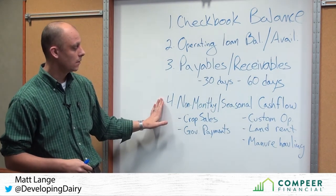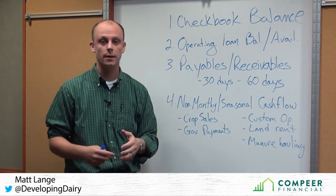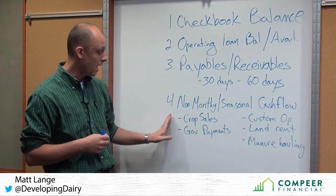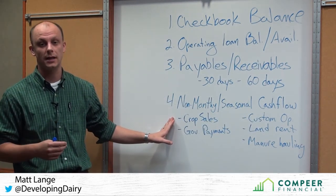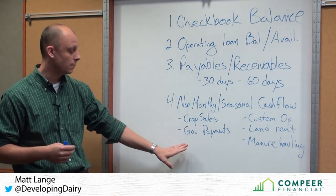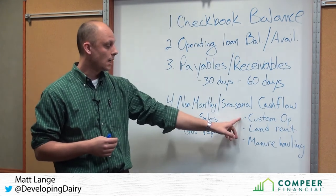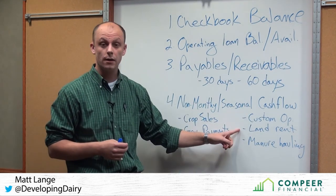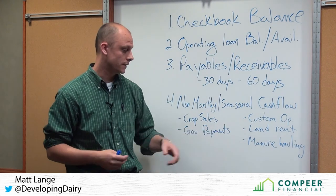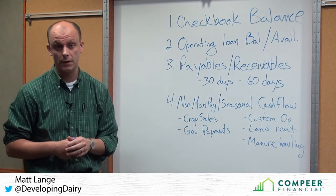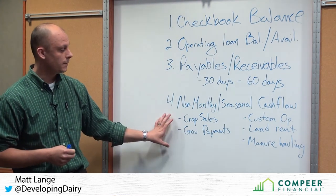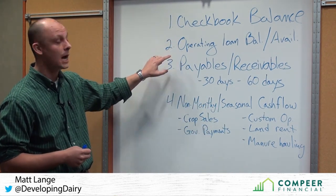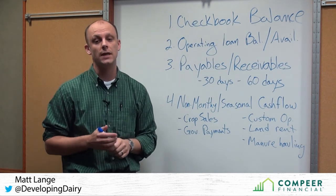Lastly, we can take a look at our non-monthly or seasonal types of expenses — the items that can really hit our cash flow. On the positive side, maybe we're going to sell some soybeans in the next couple of weeks, or we have a government payment we're expecting. On the other side of the ledger, maybe we have a large custom operating bill that's due, we need to pay our year's land rents, or we still have some manure hauling to cover before the end of the year. These types of cash inflows and outflows will help us to cross-check with our checkbook and operating loan to see if we have enough cash to meet those obligations.